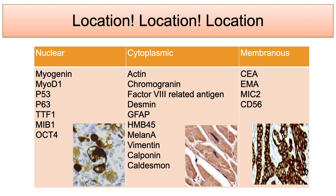In order to properly interpret immunoreactivity, it is important to know the expected location of the antigen of interest. Transcription factors like TTF1, CDX2, myogenin, PAX8, WT1, p53, p63, and steroid hormones like ER, PR, and AR function in the nucleus, so the expected immunohistochemical signal is nuclear. The proliferative marker Ki-67 is also nuclear.